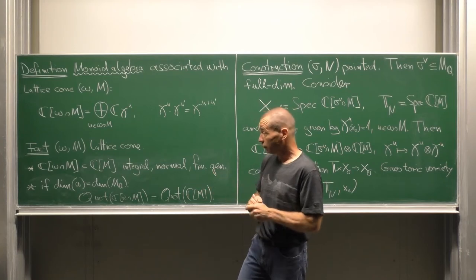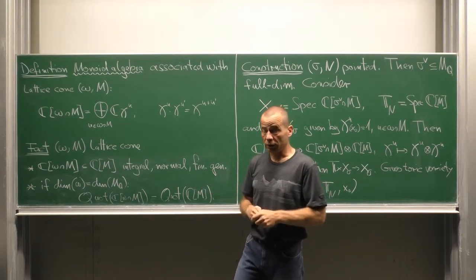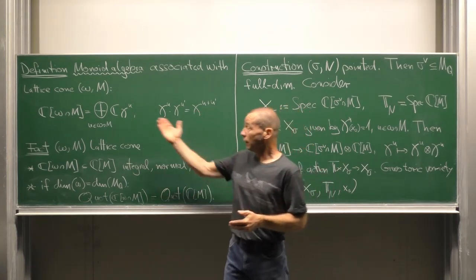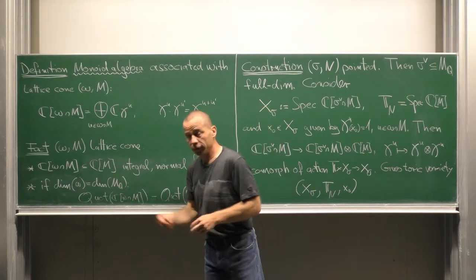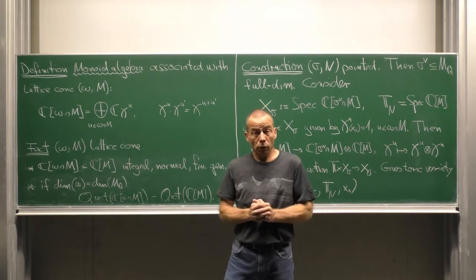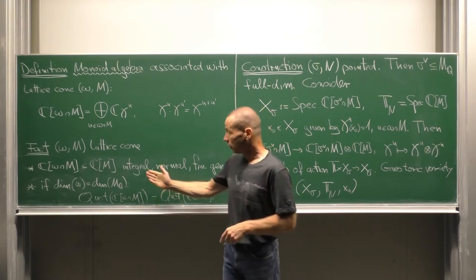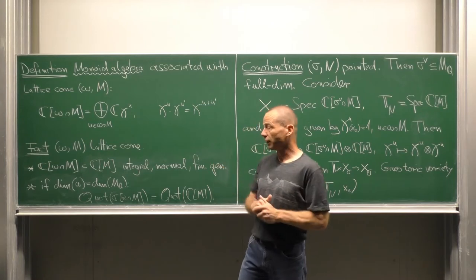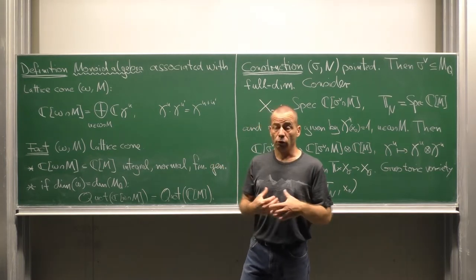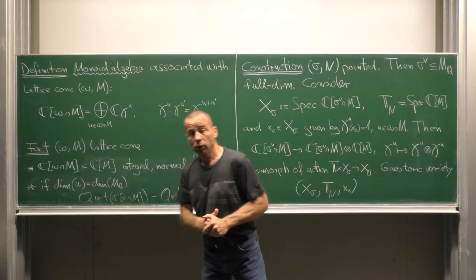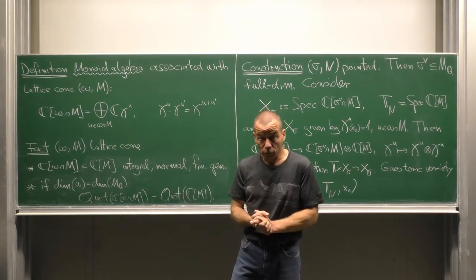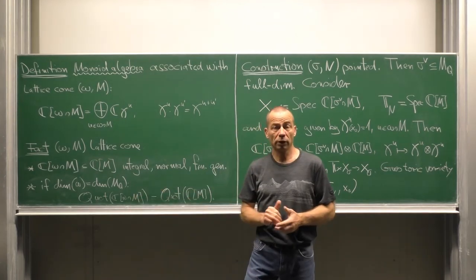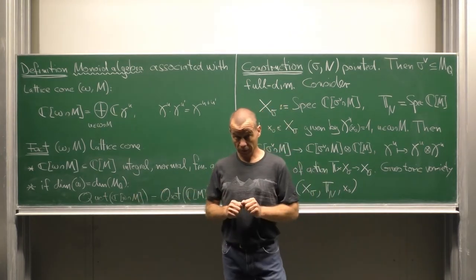Here are the basic facts about these monoid algebras. Let omega in N be a lattice cone. Then, by construction, this monoid algebra is a sub-algebra of C[M], the Laurent polynomial algebra defined by the lattice M. In particular, it is integral. Moreover, it turns out to be normal and it is finitely generated. If the dimension of the cone equals the dimension of M_Q, so omega is of full dimension, then the monoid algebra and the Laurent polynomial algebra share the same quotient fields.